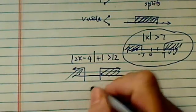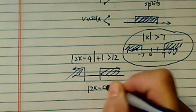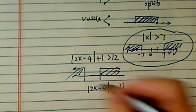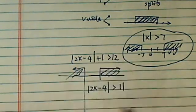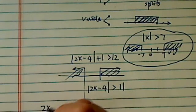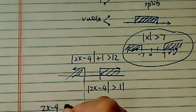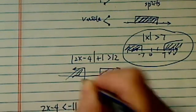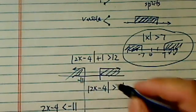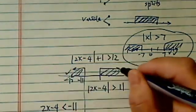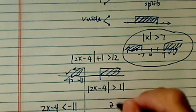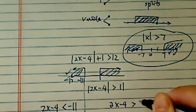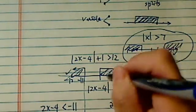Then we have 2x minus 4 bigger than 11. Since it's bigger than, I'm going to split. Half of it says 2x minus 4 can be less than minus 11. It is minus 11. Minus 12 fits. Or, on this half, I can have 2x minus 4 bigger than 11. That's on this side.